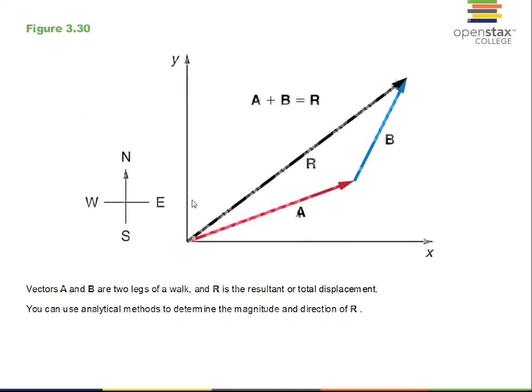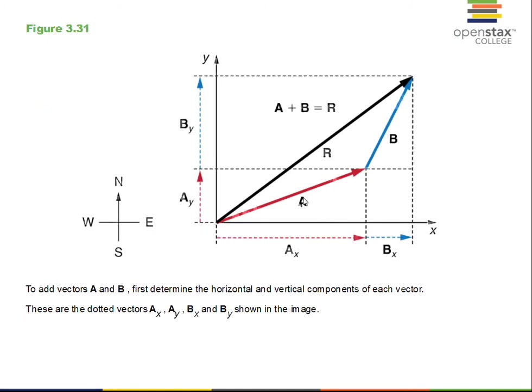For a graphical addition of vectors A and B, the textbook uses the head-to-tail method. But graphical methods are approximate since we can't make perfect sketches. Analytically, we find the x-component of A and the x-component of B; those two add up to give Rx, the x-component of the resultant R. Similarly, Ay plus By equals Ry.